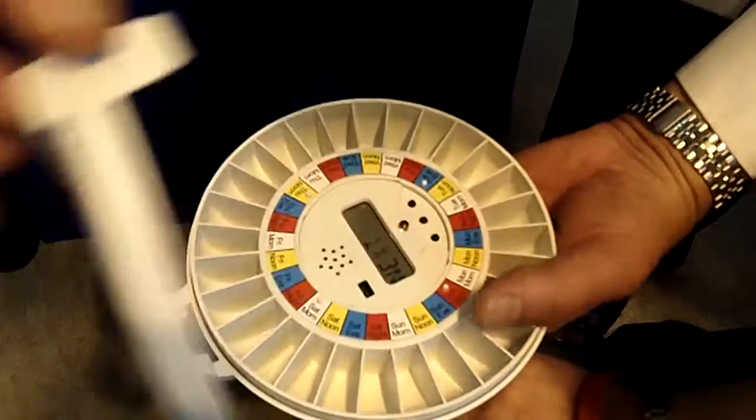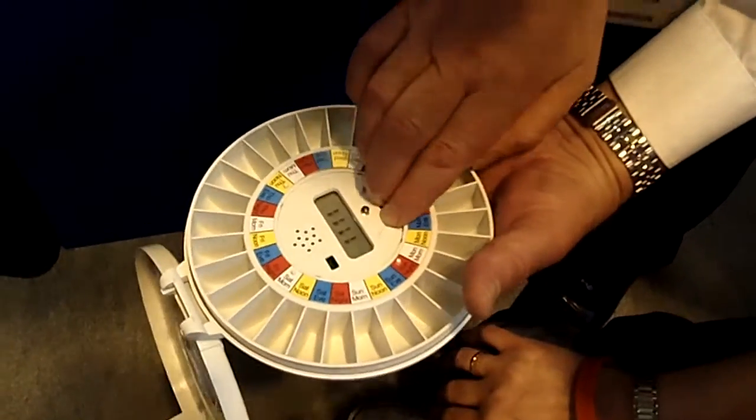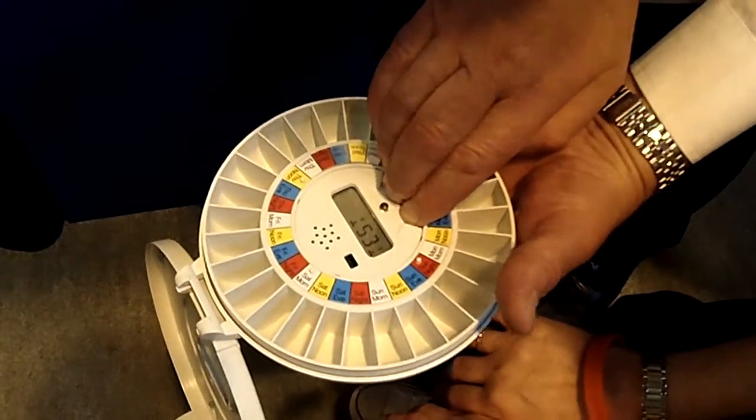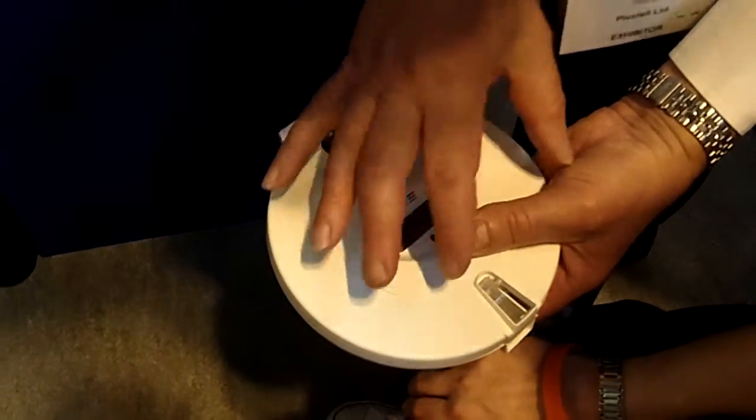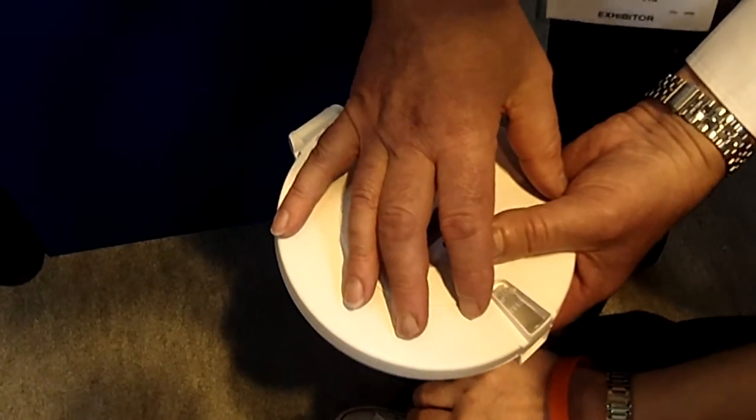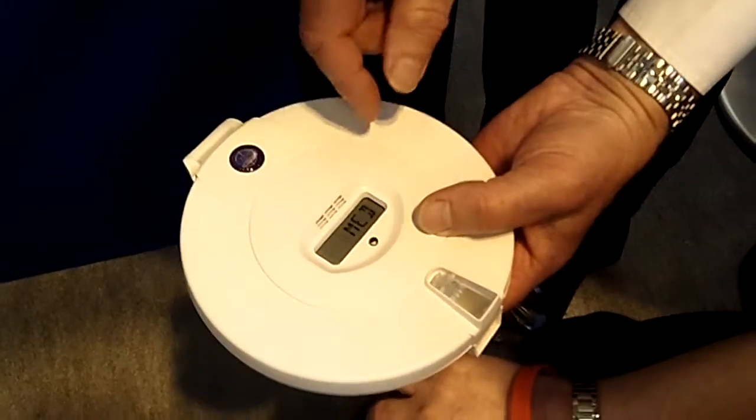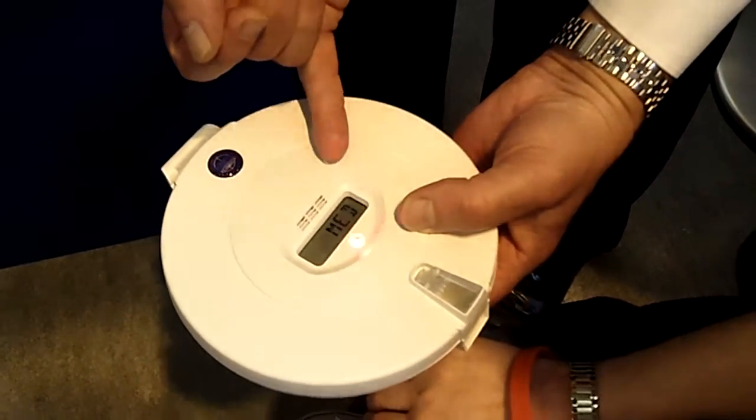The way it works is that when medications are due, the tray will rotate, the alarm sounds, the light flashes, and it tells you to take them out.